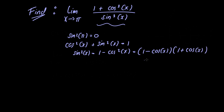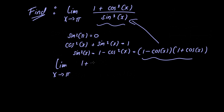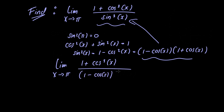So let's go ahead and substitute this value into our limit for sine squared of x. We're going to have the limit as x approaches pi of 1 plus cosine cubed of x divided by 1 minus cosine of x multiplied by 1 plus cosine of x.